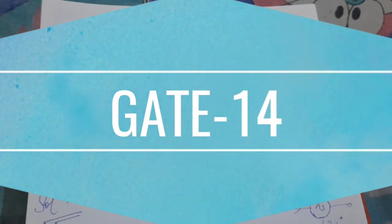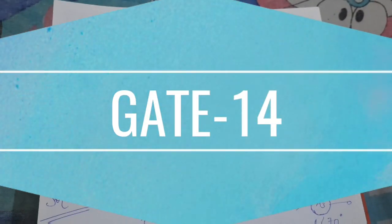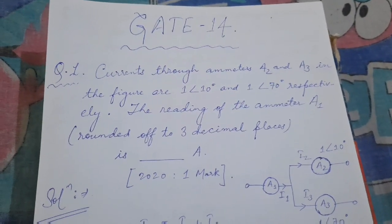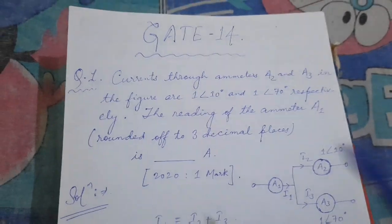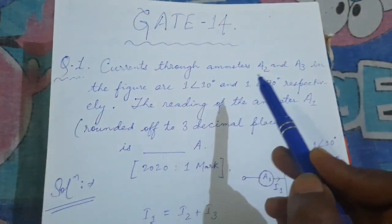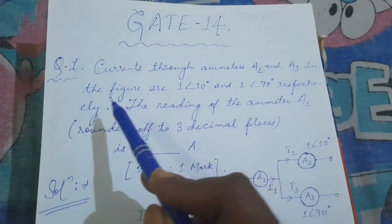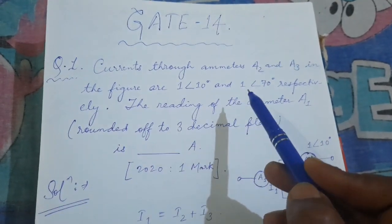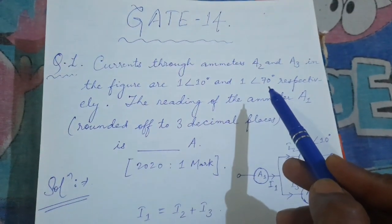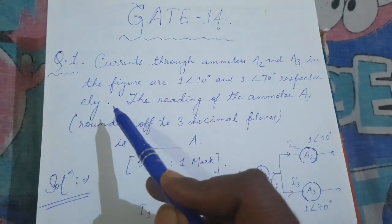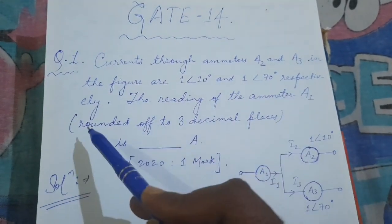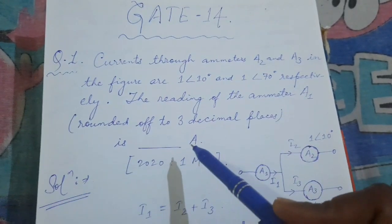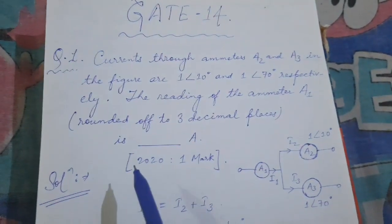Hello and welcome to Electrical with Ashish, GATE 14. Welcome everyone. Let's start Question number 1. Currents through ammeters A2 and A3 in the figure are 1 at an angle 10 degrees and 1 at an angle 70 degrees respectively. The reading of ammeter A1, rounded off to 3 decimal places, is how many amperes? This is a 2020 one-mark question.